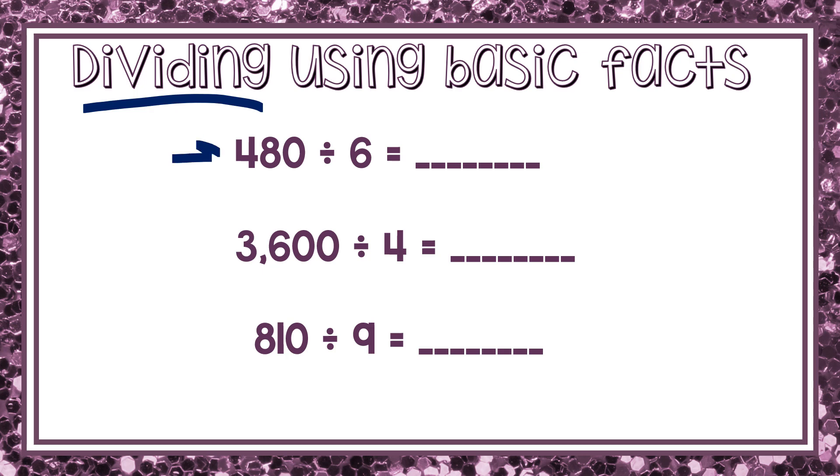So let's take the first example, 480 divided by 6. I've got to know my multiples of 6 so that I can solve this. So the basic fact is here, 48 divided by 6. I know that 48 divided by 6 is 8. I see that 480 has a zero at the end, so my answer will have a zero at the end. So my quotient, my answer is 80.